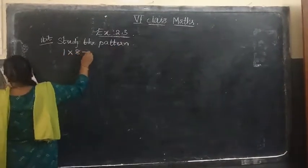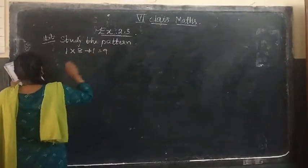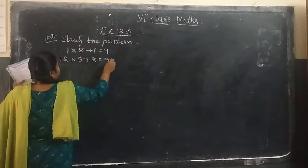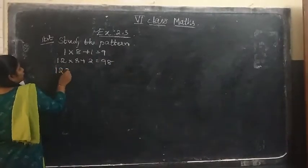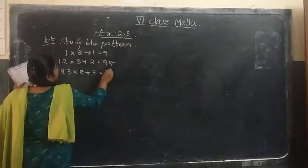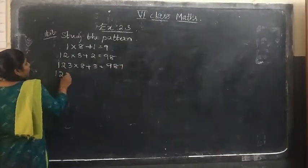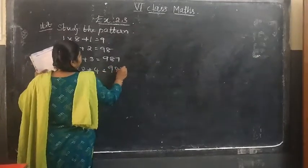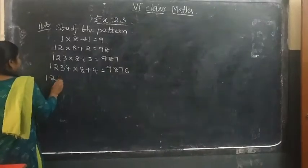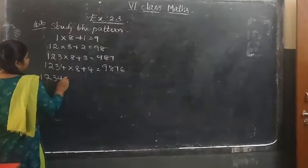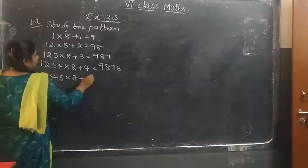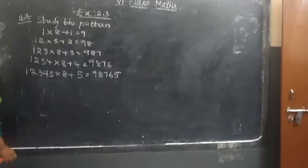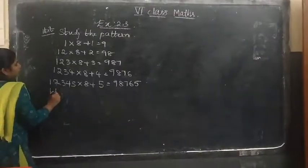The pattern given is: 1 × 8 + 1 = 9; 12 × 8 + 2 = 98; 123 × 8 + 3 = 987; 1234 × 8 + 4 = 9876; 12345 × 8 + 5 = 98765. This is the pattern given and we have to write the next four steps for it.